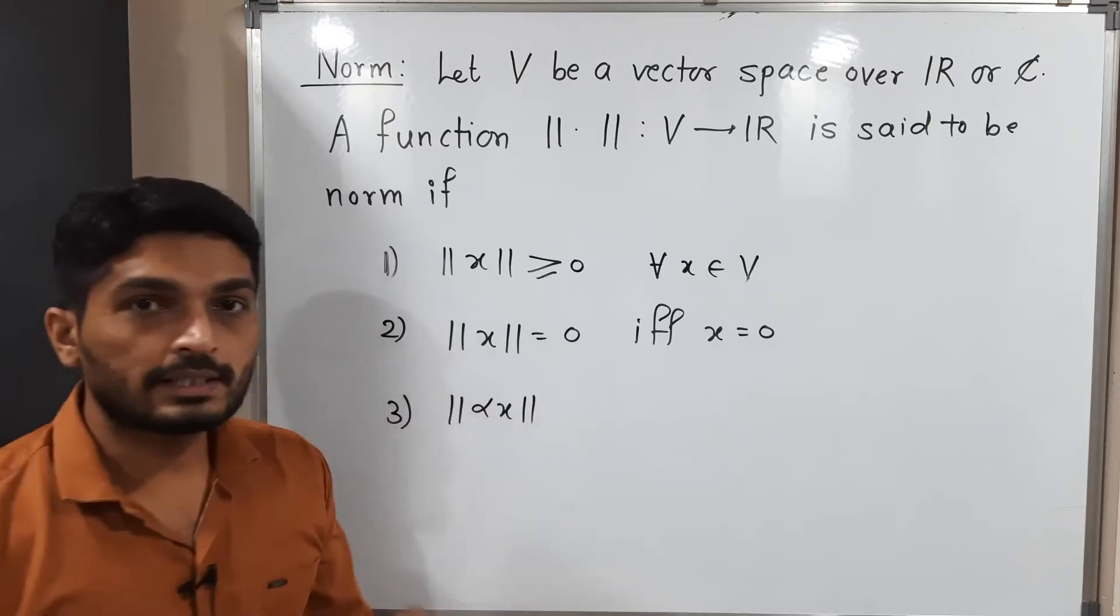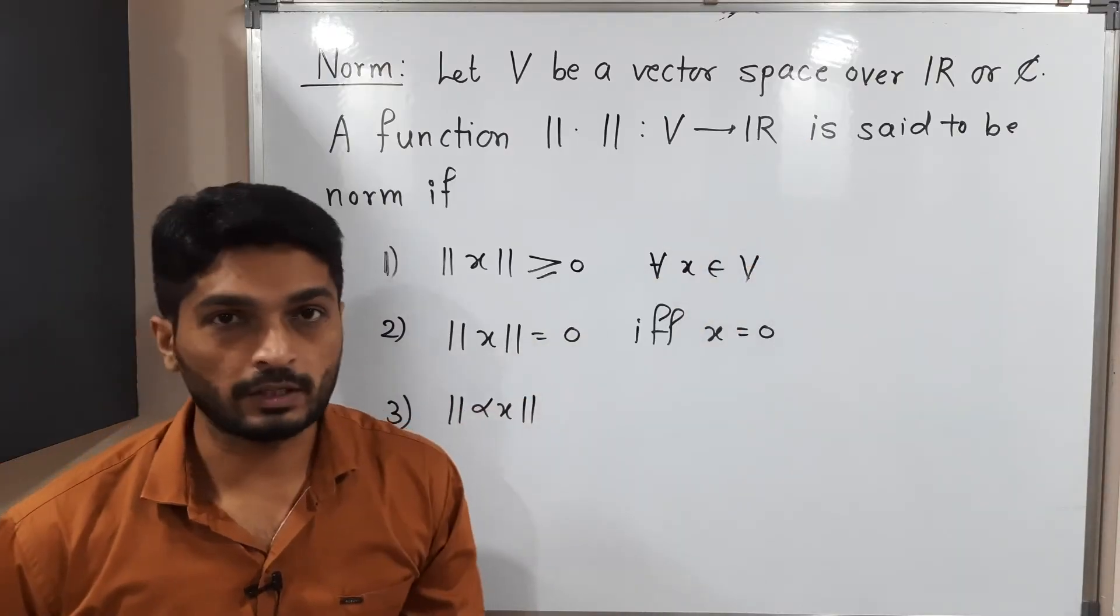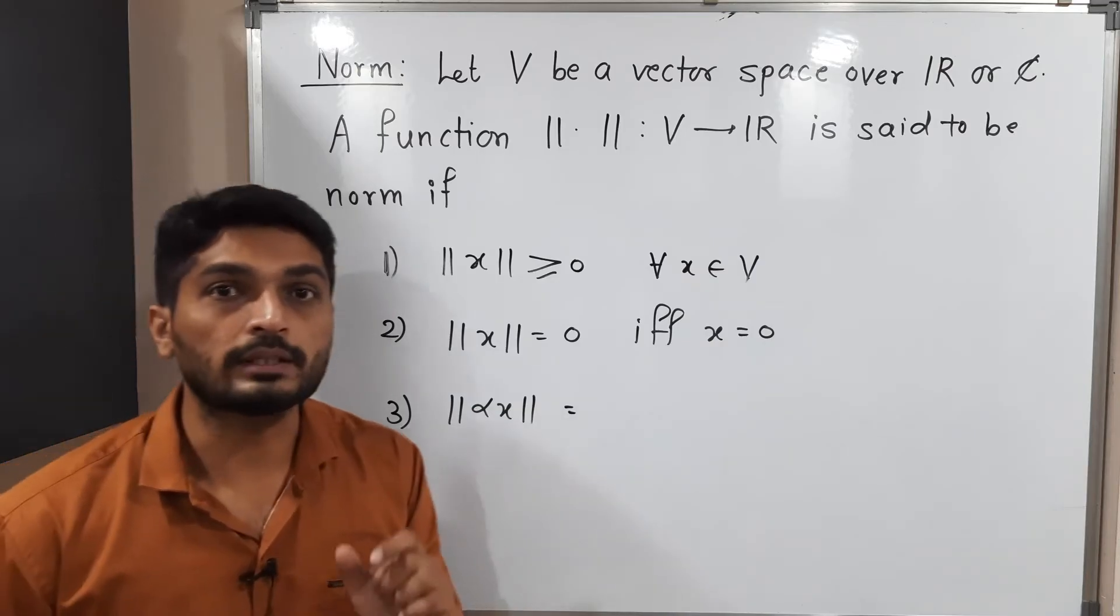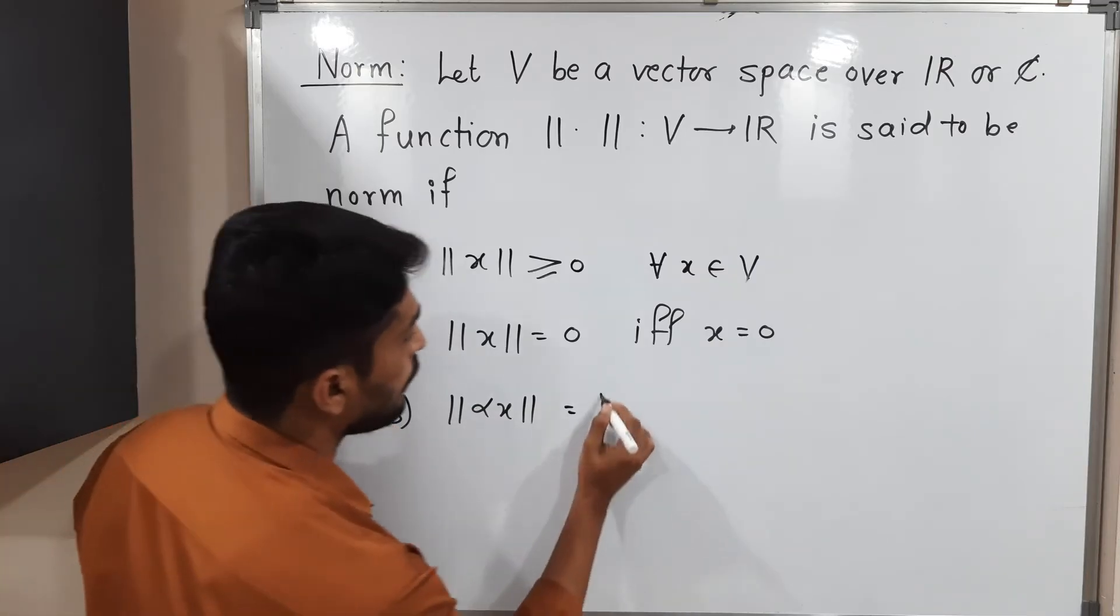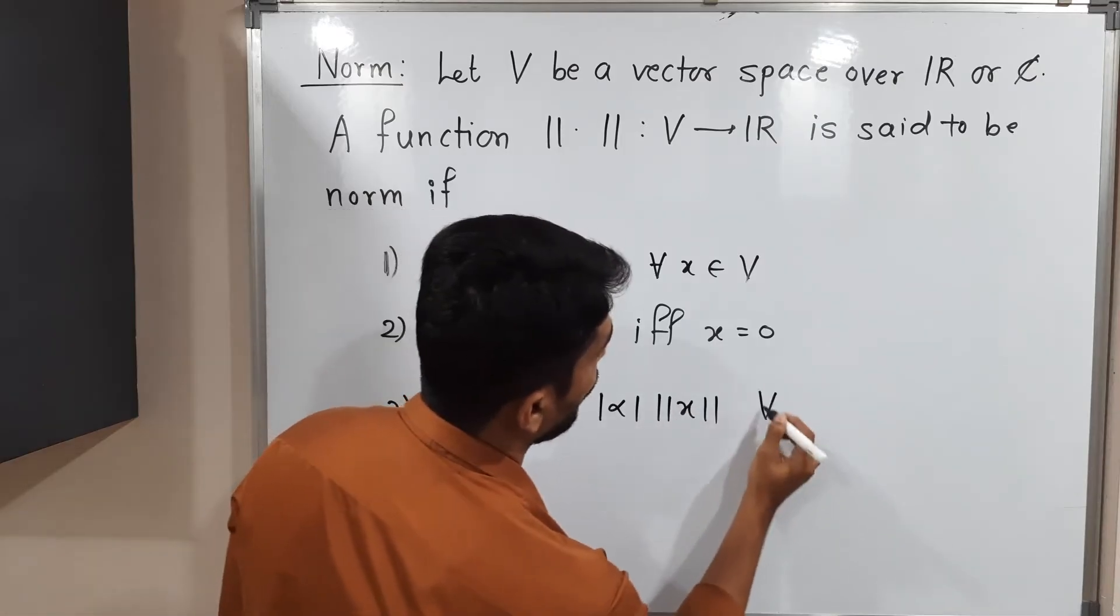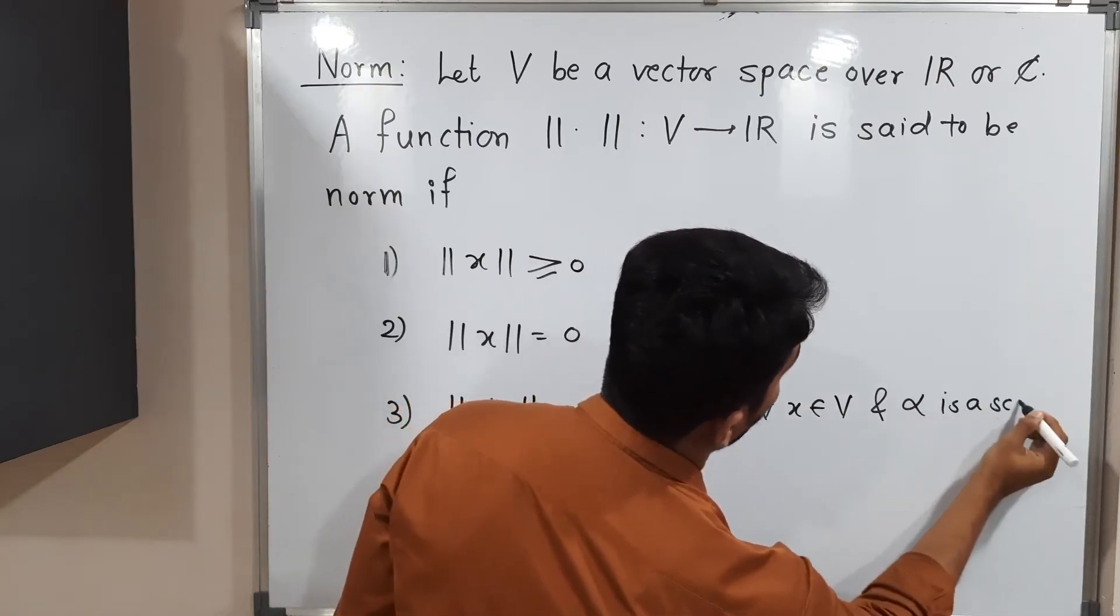Third condition: norm of alpha X, where alpha is any scalar from R or C. In that case, we can take that scalar outside, but it will come with a mod. That means we will have mod alpha times norm X, for all X belongs to V and alpha is a scalar.